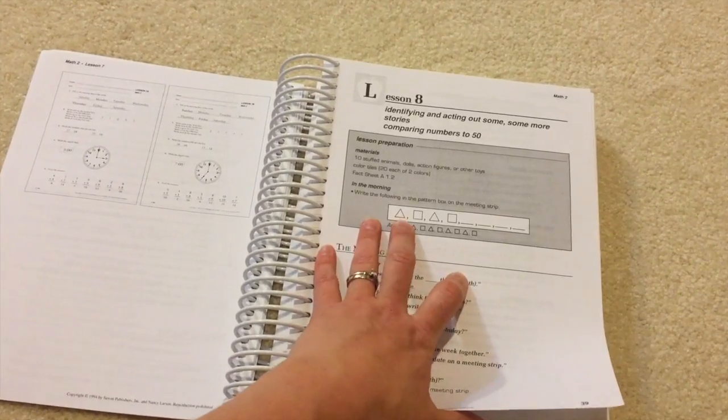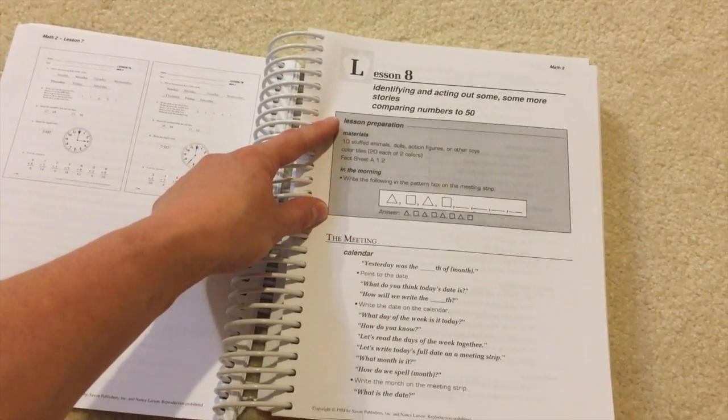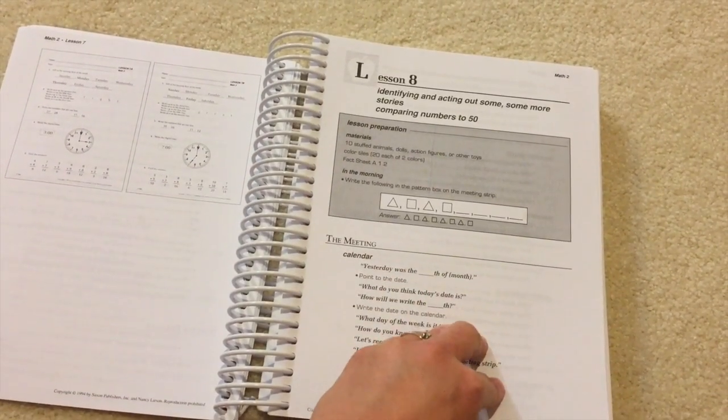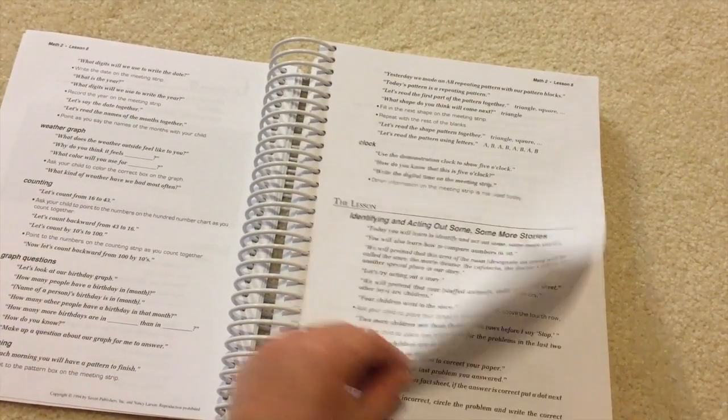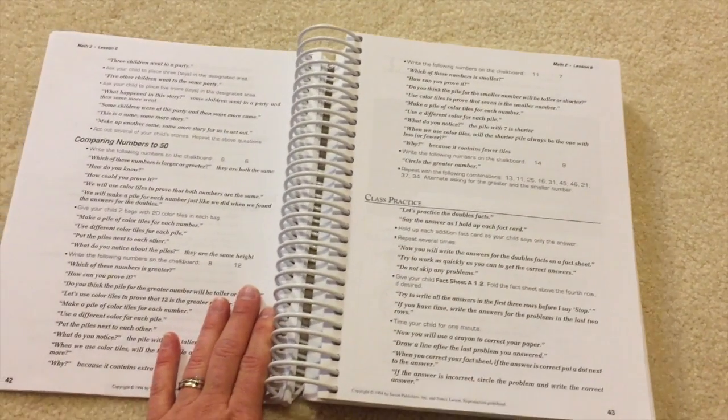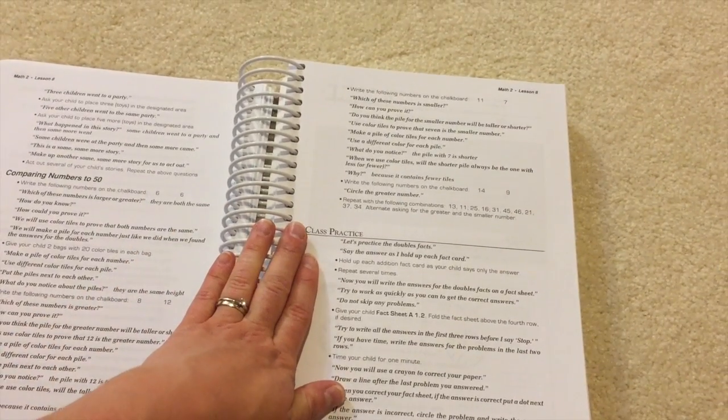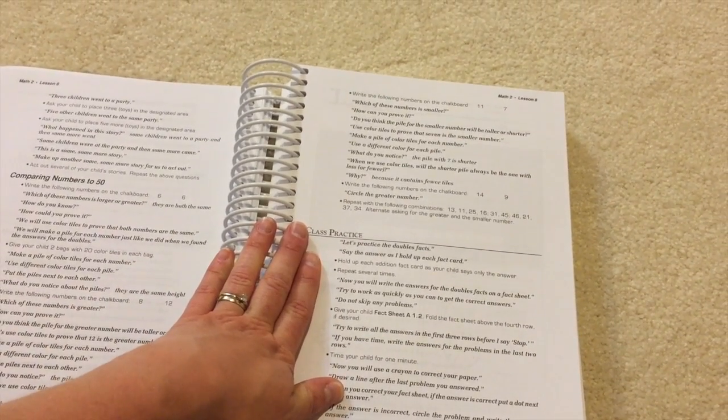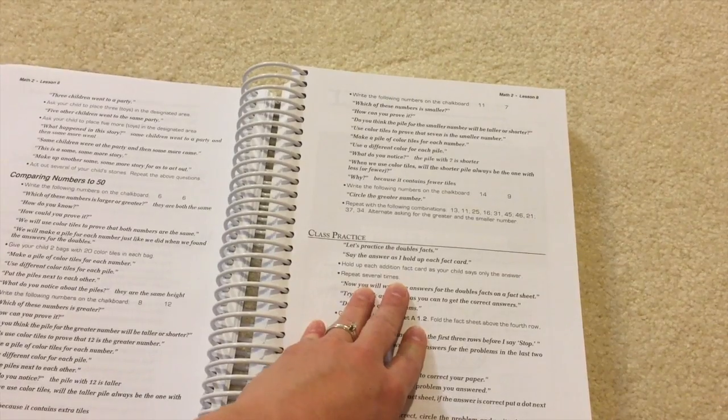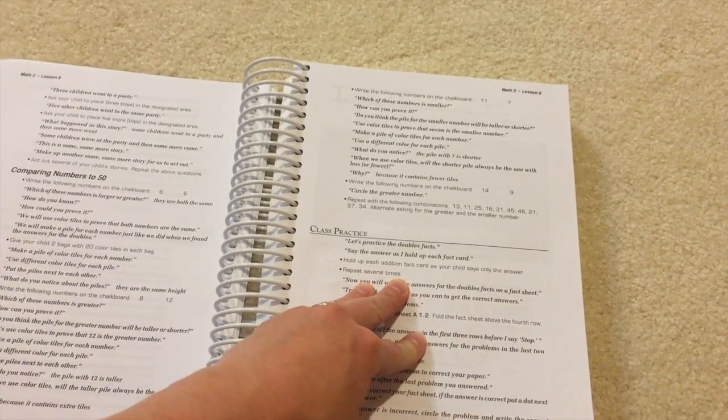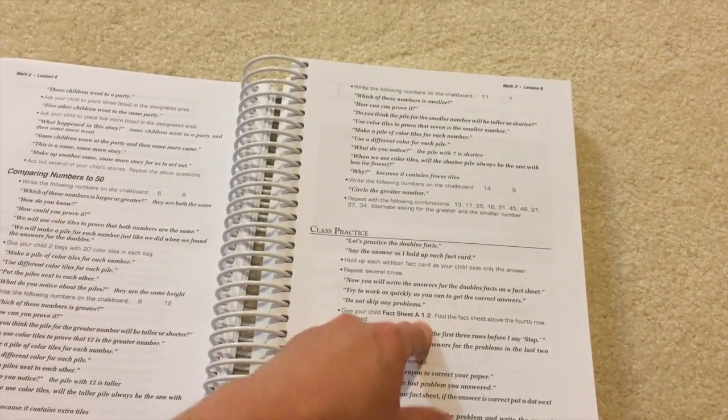If we skip ahead to a lesson that actually has a fact sheet. Okay, so here again, after lesson seven is done, I'm going to go to lesson eight gray box, I'm going to look at this, make sure that I have everything on hand, and then move on for the day. We will avoid the meeting. We will go through the lesson portion. And then it has this class practice area. And obviously, Caitlin is the only pupil in her class. So she and I will just go through and we will do, we will refresh on whichever facts we're working on. And then we will do the fact worksheet. She will do this actually by herself.